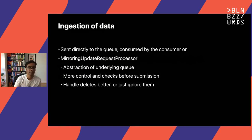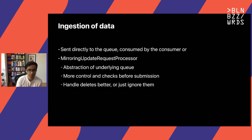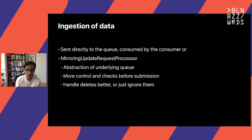Ingesting data into this system can happen in one of two ways. It can either be sent directly to the queue and consumed by the consumer, in which case you would need an external version and would not get all the benefits of the second option. The second option is using a mirroring update request processor, which is a custom request processor that makes sure the request is processed knowing that cross-DC is enabled. One of the biggest benefits it provides is the abstraction of the underlying queue — if you start off with Kafka, you wouldn't have to change your client code because the client is agnostic of that queue.